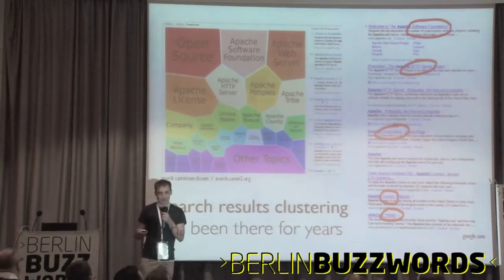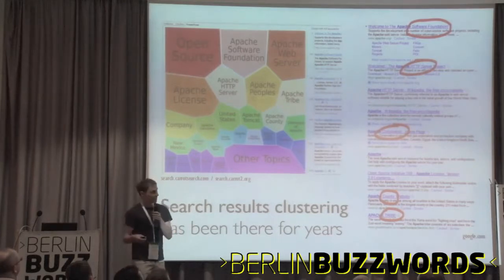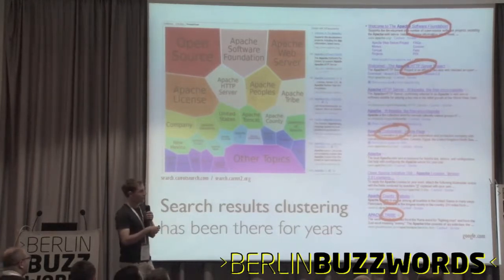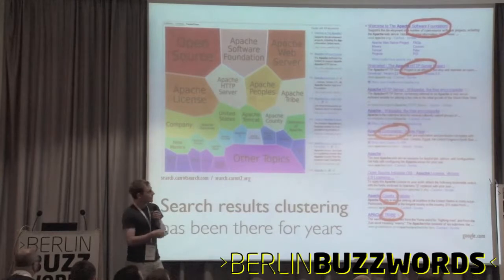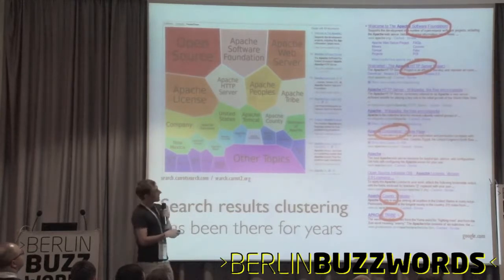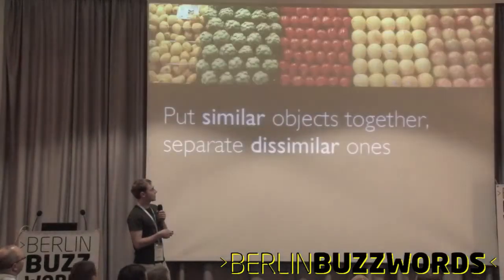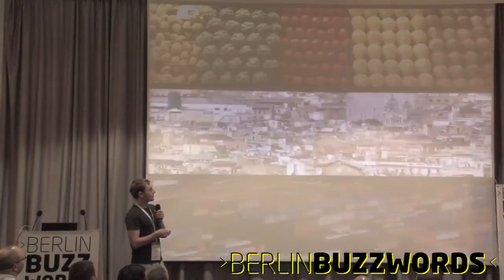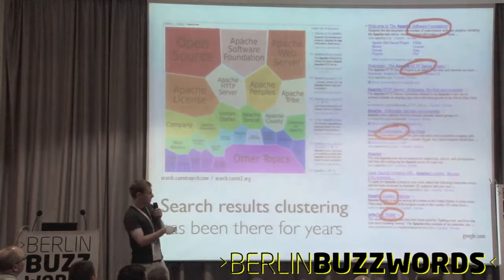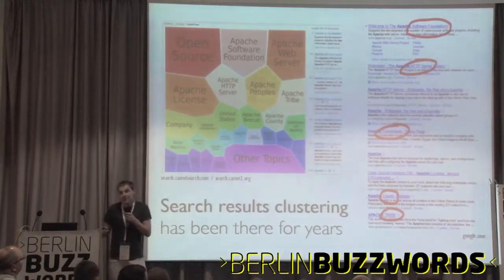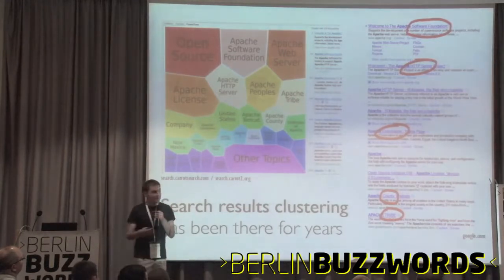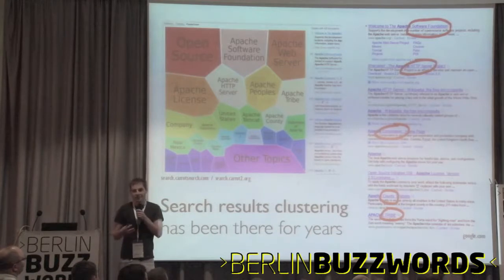On the other hand, if you go to Google and type the same query, on the very first page you'll see results related to the software foundation, the HTTP server, but also the Native American tribe. I don't know how they do it, but the net effect is that there is some sort of implicit clustering in there as well.